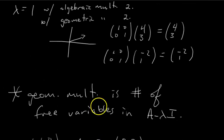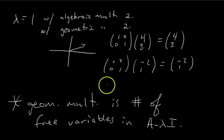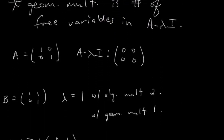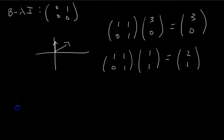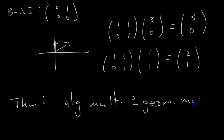So if you notice, the geometric multiplicity is never bigger than the algebraic multiplicity in these two examples, and it's a theorem that it will never be. So a quick theorem that you guys should know, algebraic multiplicity is always greater than or equal to the geometric multiplicity.